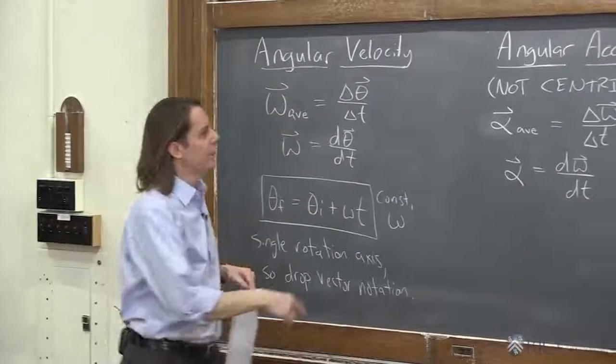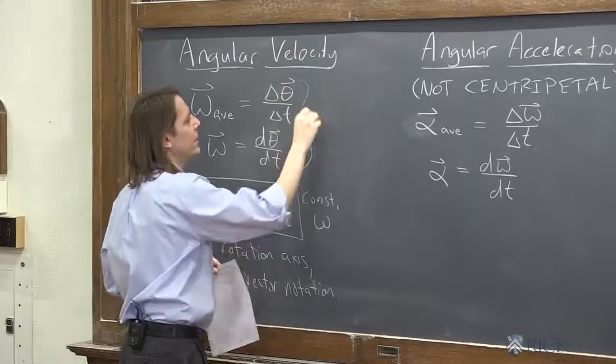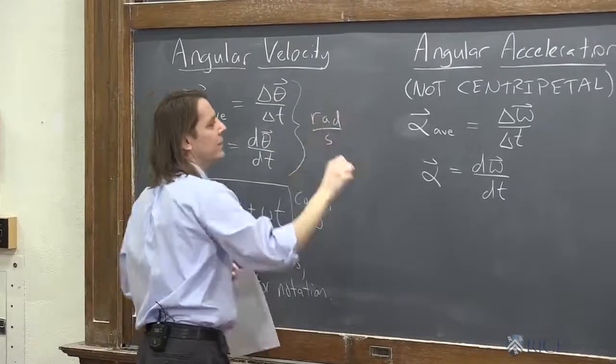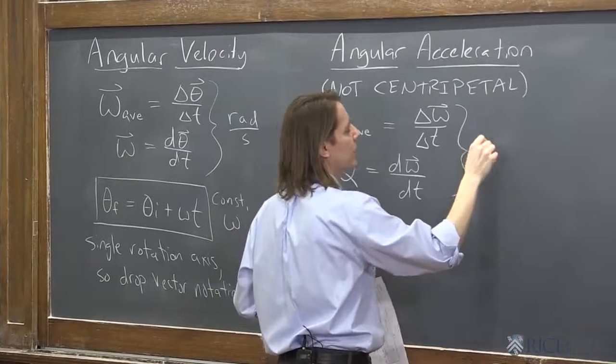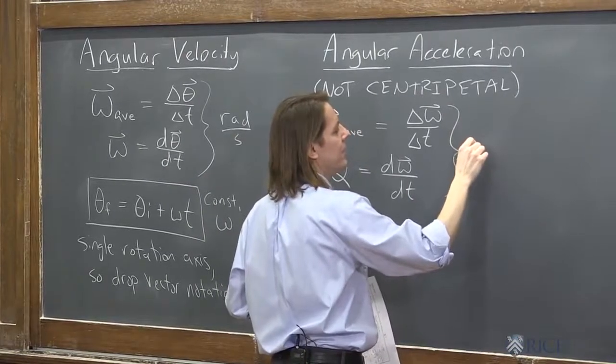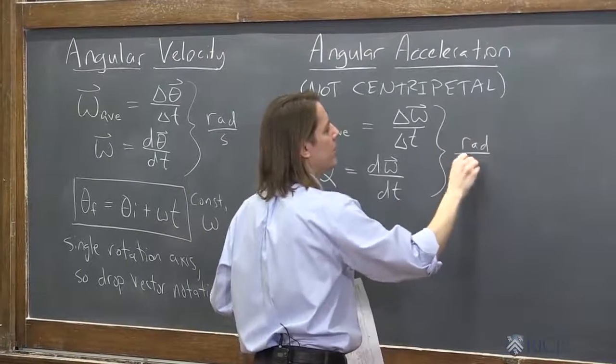I forgot to do units. So the unit here for omega is radians per second. And the unit here for angular acceleration, alpha, is radians per second squared.